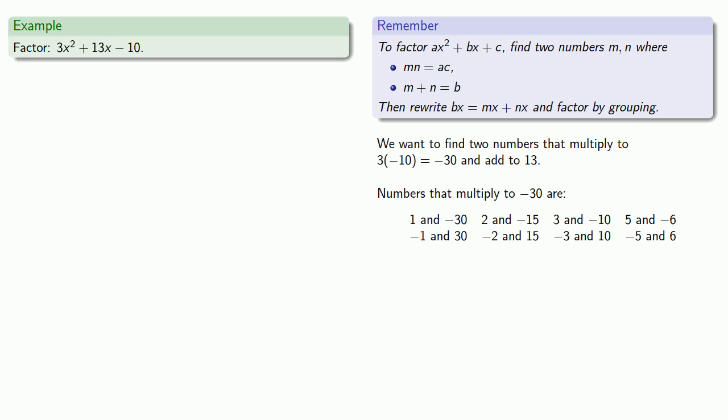Now remember, we're actually looking for two numbers that multiply to -30 and add to 13. So any of these multiply to -30, and so we look for a pair that adds to 13.